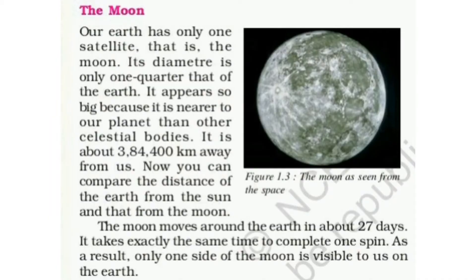The Moon. Our Earth has only one satellite, that is the Moon. Its diameter is only one quarter that of the Earth. Hamari Earth ke paas kewal ek satellite hai — Moon. Iska diameter Earth ke diameter ka kewal ek chauthai hai. Yeh itna bada isliye dikhayi deta hai, kyunki yeh hamare se anya celestial bodies ki apeksha nearest hai.